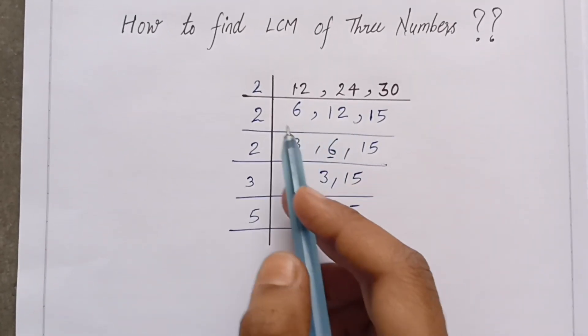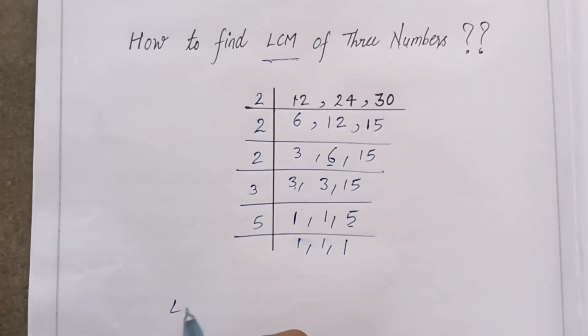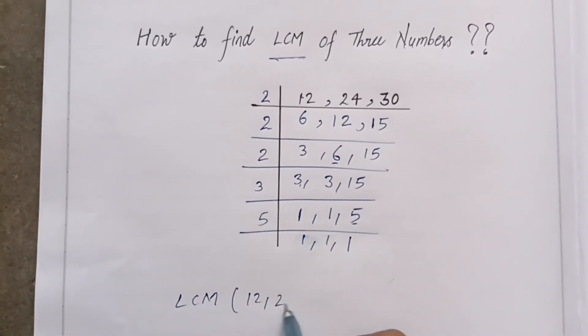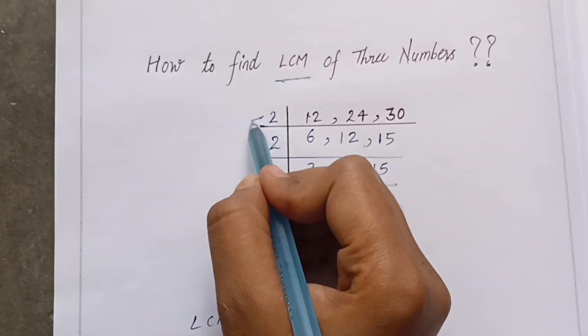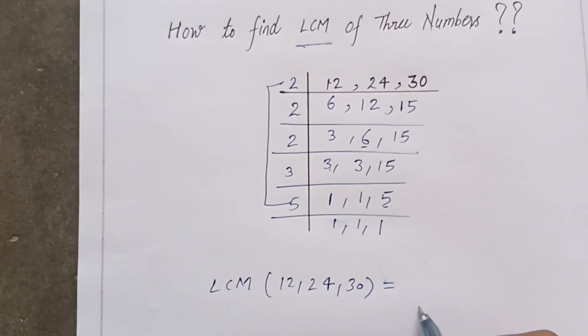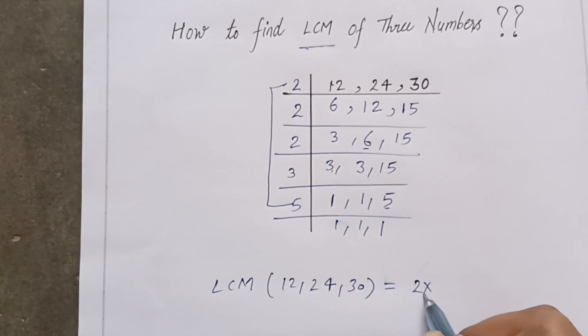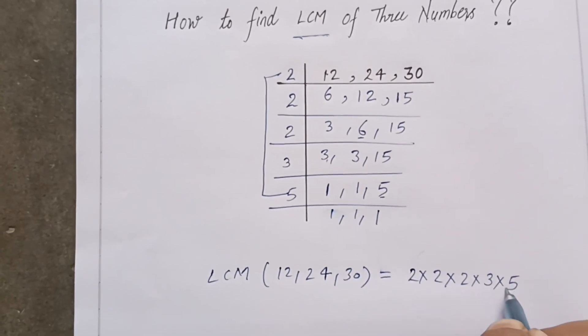Now we find the LCM of these three numbers: 12, 24, and 30. First we write: LCM of 12, 24, and 30 is equal to... Now we call divisors of the corner, then we multiply this number as it is: 2×2×2×3×5. If we multiply with that, it will be directly multiply.